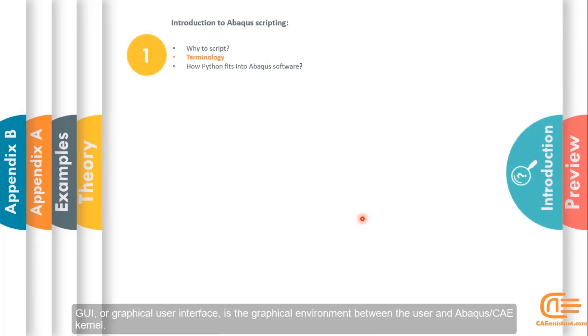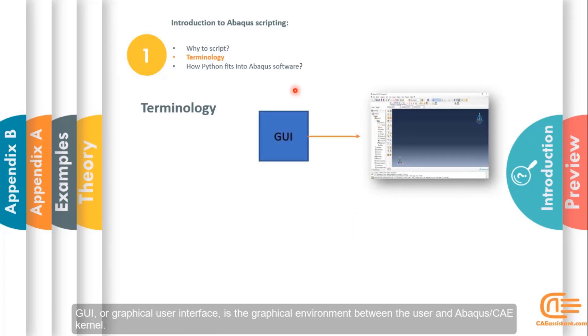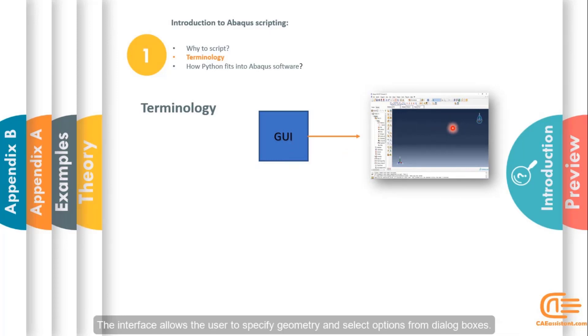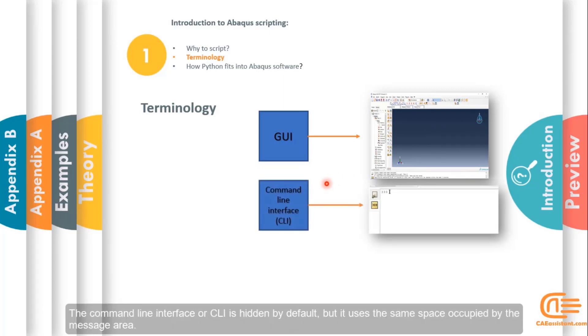Useful words in Abacus scripting: GUI or graphical user interface is the graphical environment between the user and Abacus CAE kernel. The interface allows the user to specify geometry and select options from dialog boxes. The command line interface or CLI is hidden by default, but it uses the same space occupied by the message area.